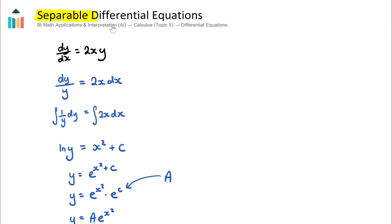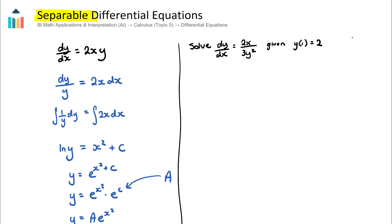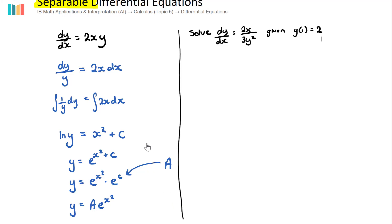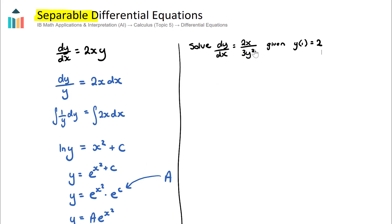I'm going to give you one more example. We want to solve the differential equation where dy/dx = 2x over 3y², given an initial condition. As you may remember from the previous video, we can use this initial condition to find the particular solution to our differential equation — the previous result was a general solution because we didn't know what the constant A was. We can recognize this is a separable differential equation because we can write dy/dx = 2x × (1 over 3y²), which is some function of x multiplied by some function of y.